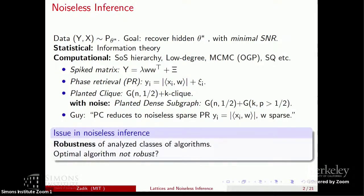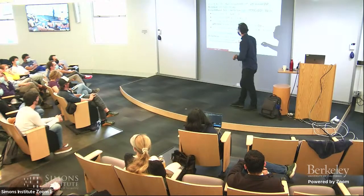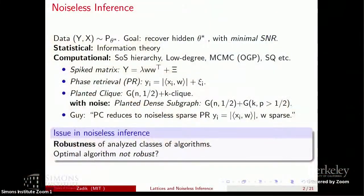I claim the planted clique model has noiseless characteristics: if I inject Bernoulli noise, the model changes to the planted dense subgraph problem, which is a different structure. An optimal polynomial-time algorithm for the planted clique model doesn't necessarily need to solve that noisy version — maybe it uses the rigidity of the planted clique. There's also a reduction — in work by Guy Bresler — from the planted clique problem to the noiseless phase retrieval problem with sparsity, so if you find a polynomial-time algorithm for the sparse noiseless phase retrieval regime, you could enter the planted clique regime.